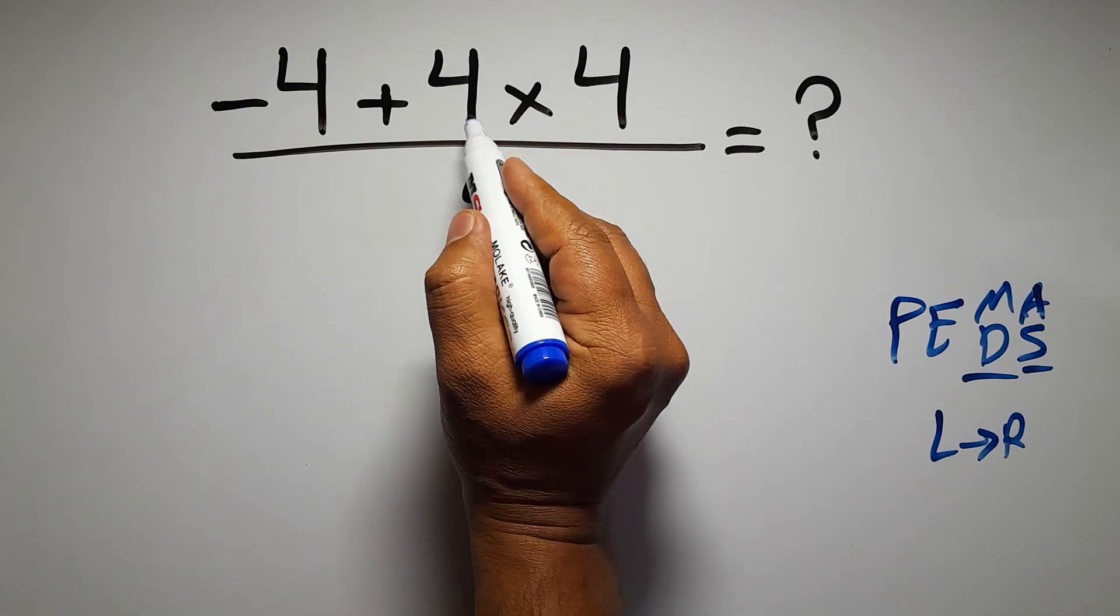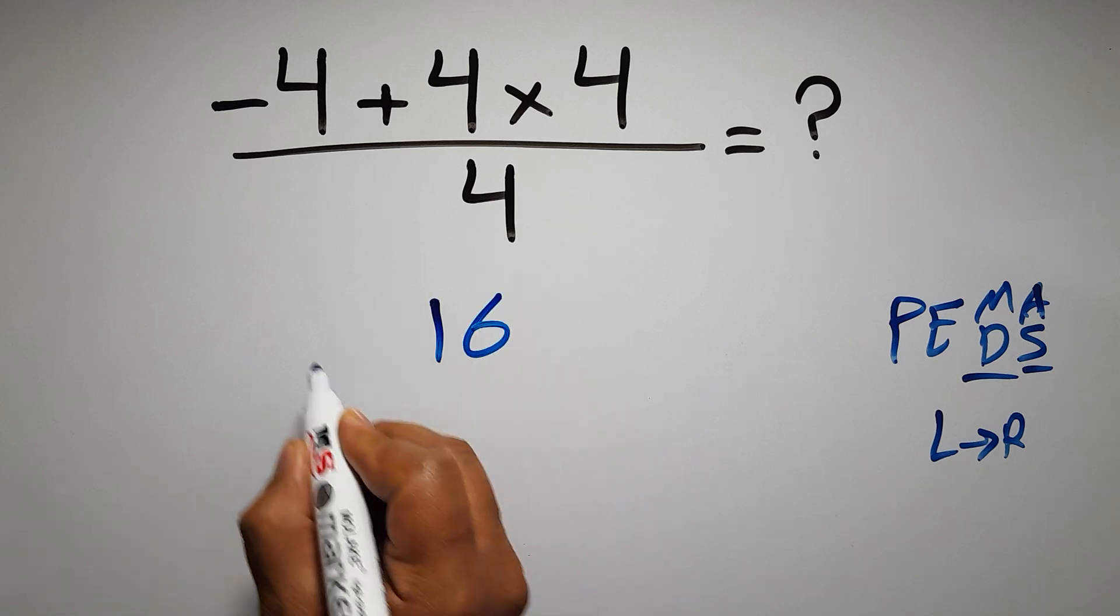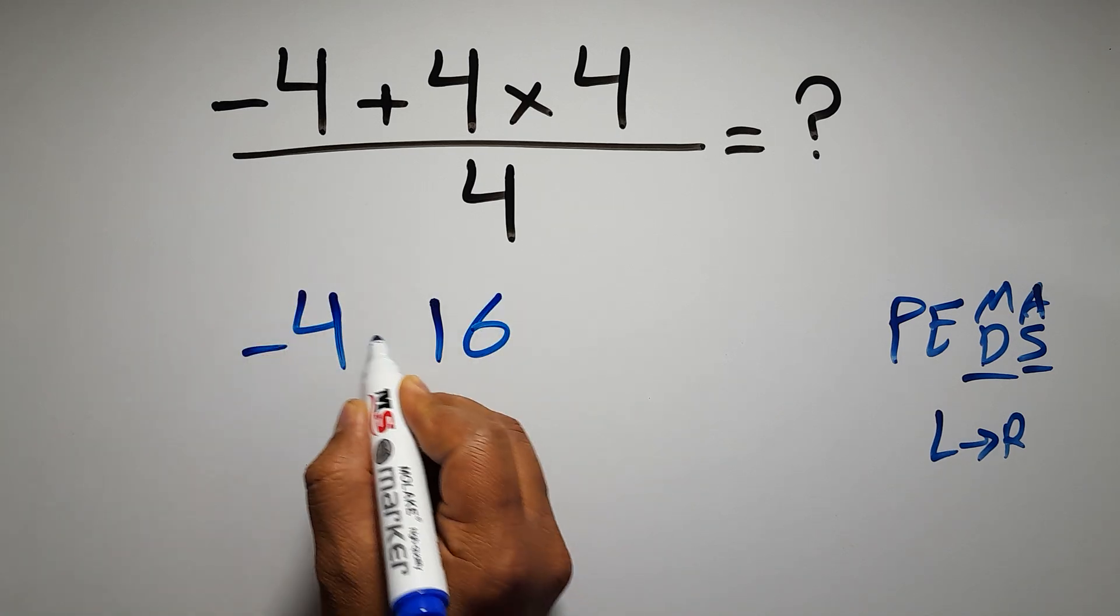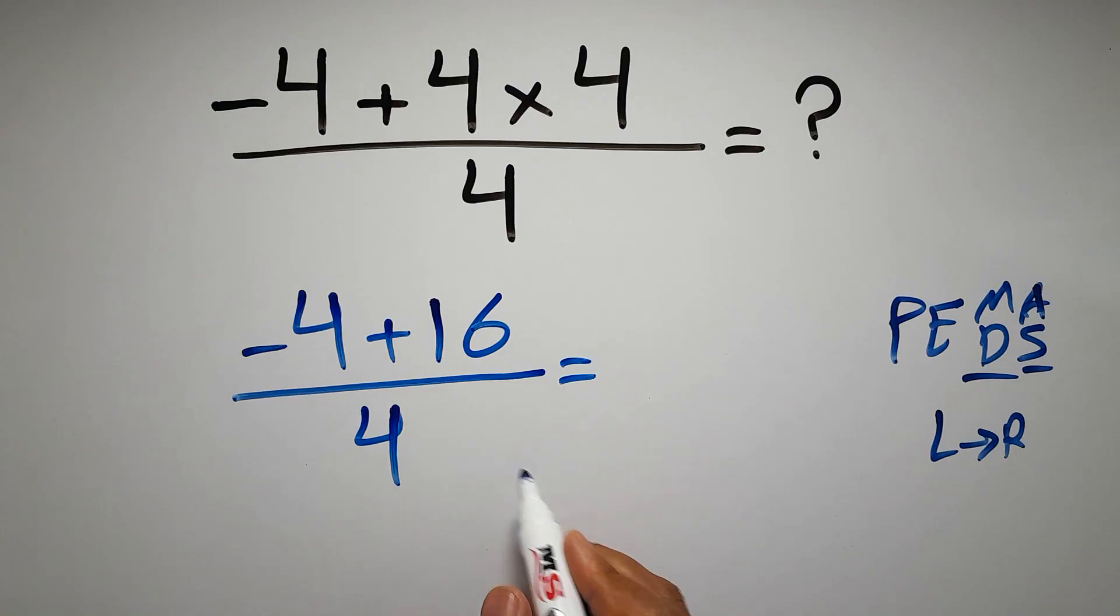So first, 4 times 4, which gives us 16. So negative 4 plus 16 over 4. Now we have to do this addition.